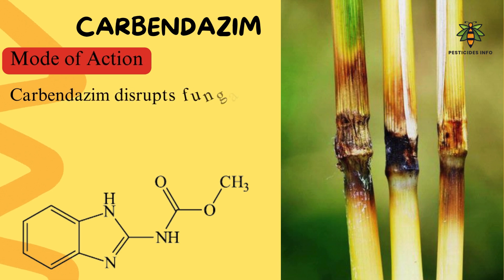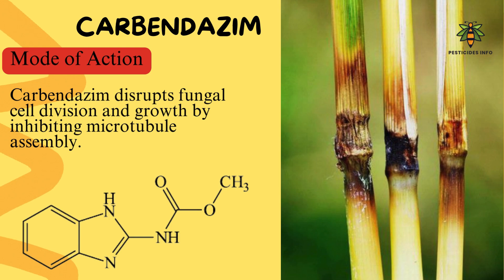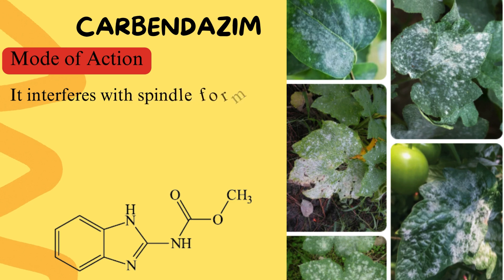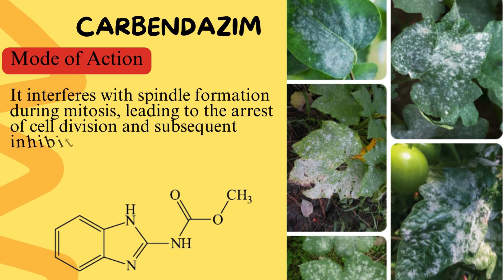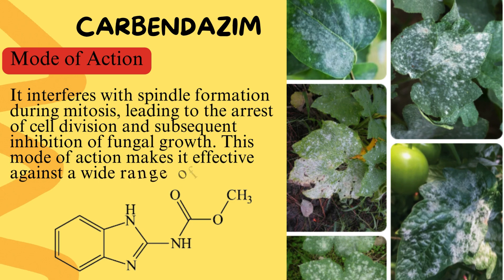Mode of action. Carbondazine disrupts fungal cell division and growth by inhibiting microtubule assembly. It interferes with spindle formation during mitosis, leading to the arrest of cell division and subsequent inhibition of fungal growth. This mode of action makes it effective against a wide range of fungal diseases.